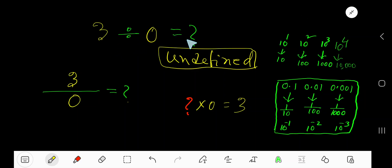Three divided by zero equals what? The result or answer is undefined. Let me explain. Three divided by zero equals what? Here, three is the dividend, zero is the divisor, and here